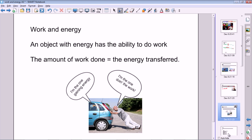Okay, so that's the basics on work. This is about its relationship with energy. So the definition of energy, if you like, is that if an object has energy or a body has energy, it has the ability to do work on another object or possibly even on itself. So an object with energy has the ability to do work, and actually the amount of work done by the object will be equal to the energy transferred.